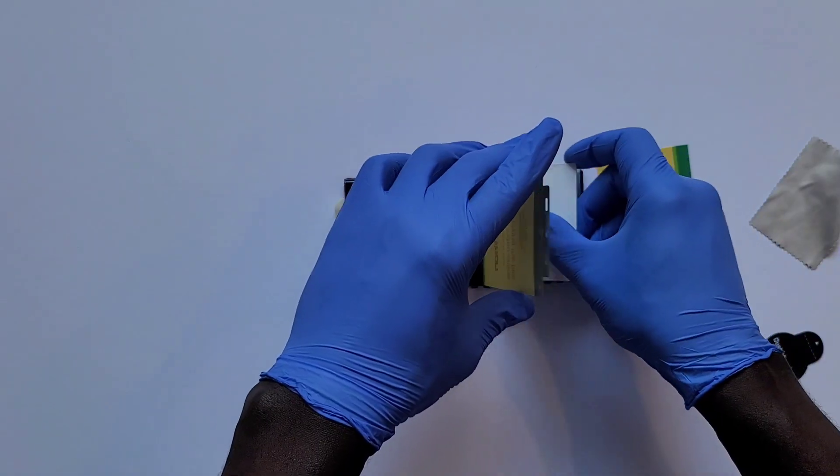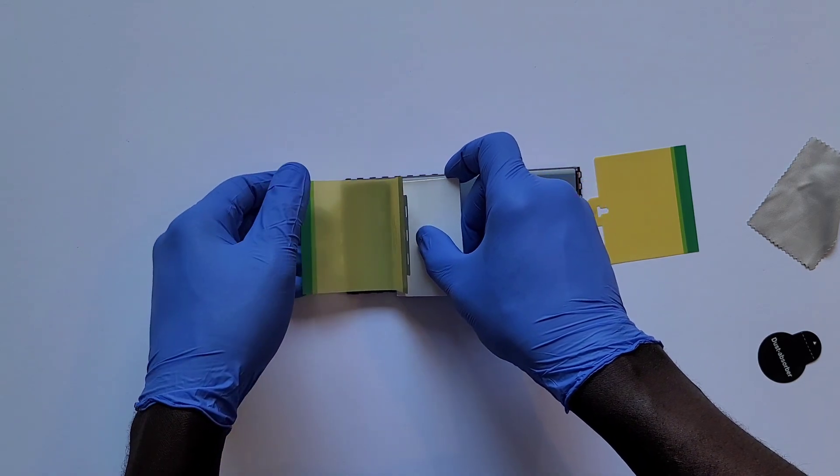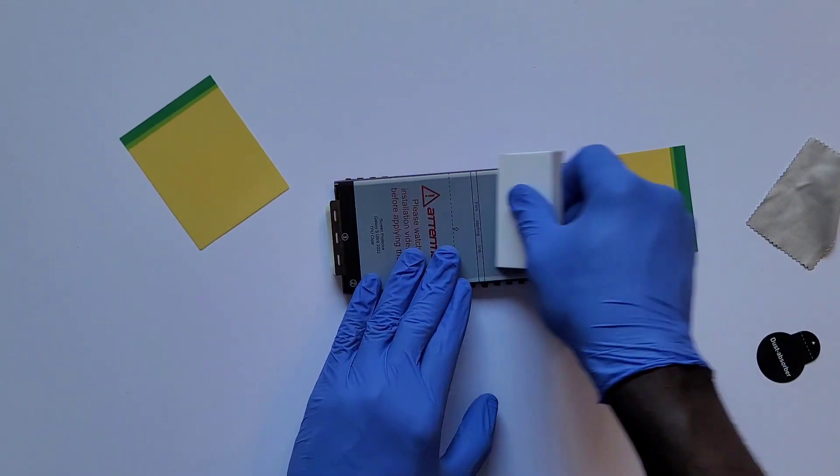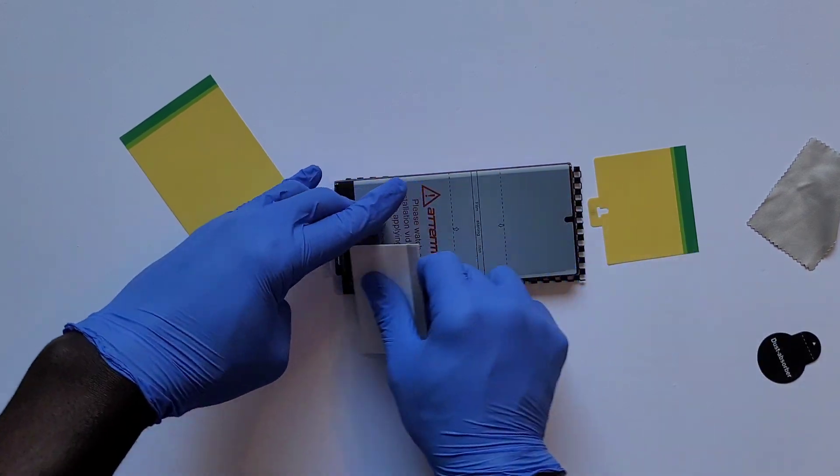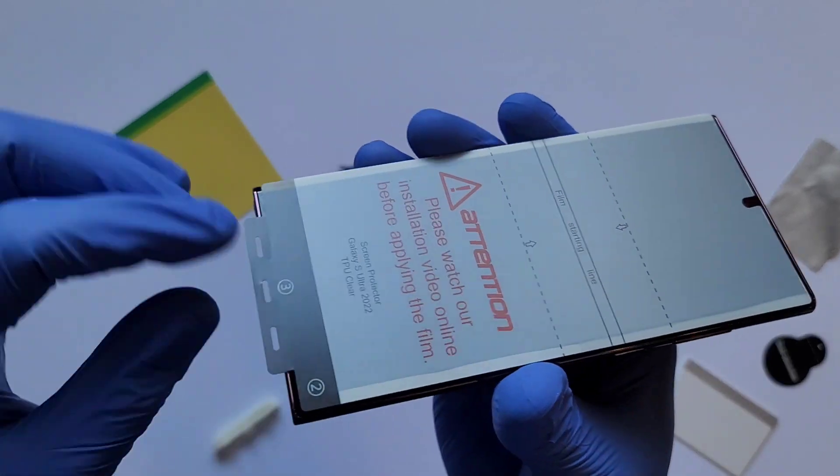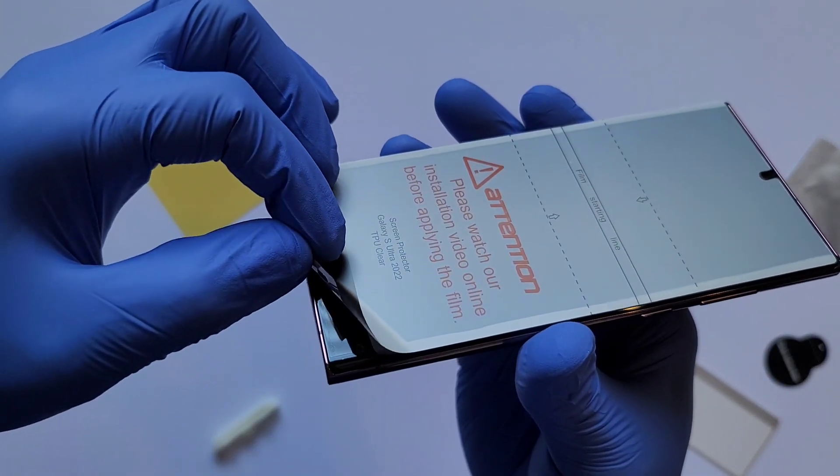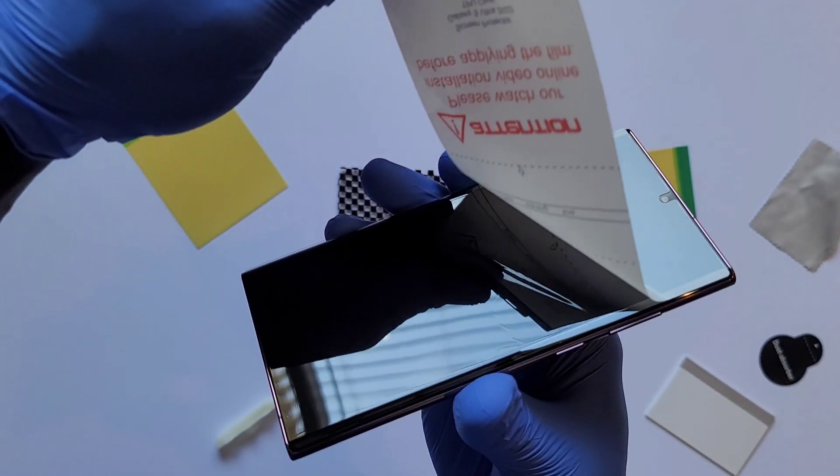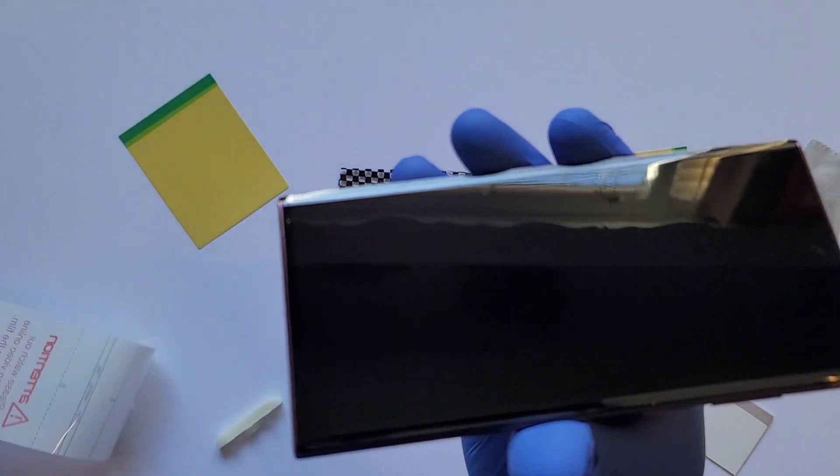Do the same for the bottom. Now you have a screen protector on your phone. It is pretty much done, simple as that. Now it's time to remove that attachment. Remove the top part of the screen protector to leave the soft TPU on the phone. Your S22 Ultra is protected from all scratches.